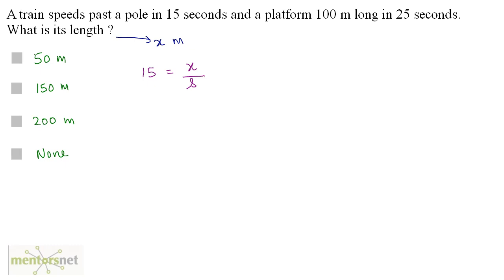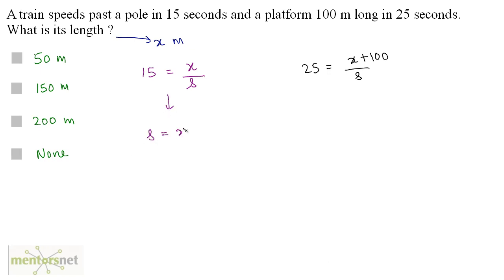This train also speeds past a platform which is 100 meters long in 25 seconds. So we have 25 — the time is equal to distance upon speed. The speed is the same, S. The distance is the length of the train plus the length of the platform, which is X plus 100. So we have two equations: S equals X by 15, and S equals X plus 100 by 25.